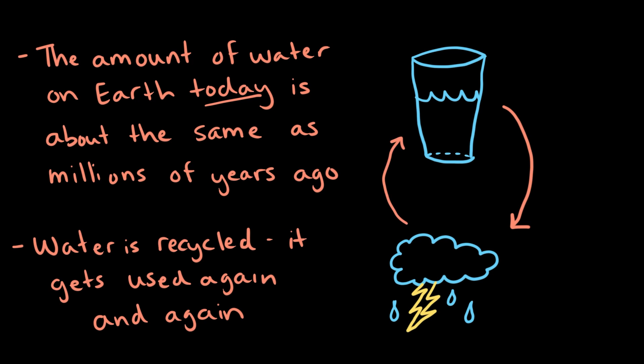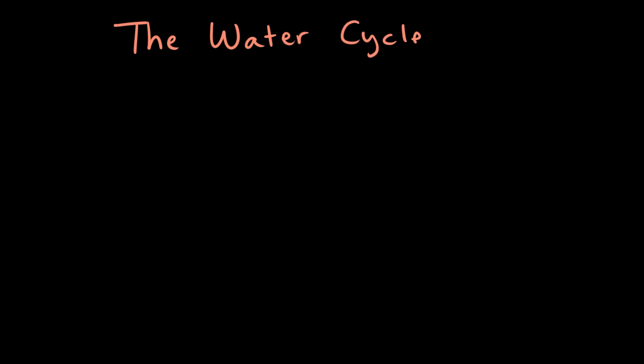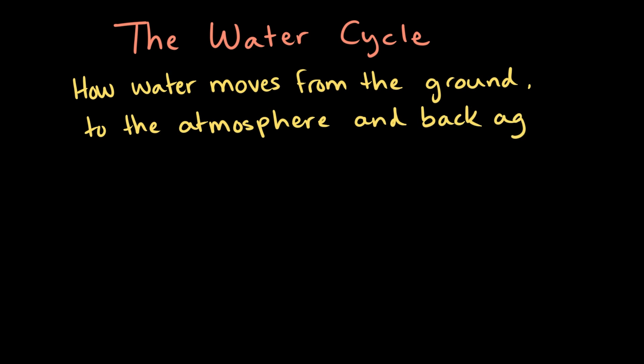That's because water is recycled. It just gets used again and again. And that brings us to the water cycle, which is how water continuously moves from the ground to the atmosphere and back again. And as water moves through the cycle, it changes form.